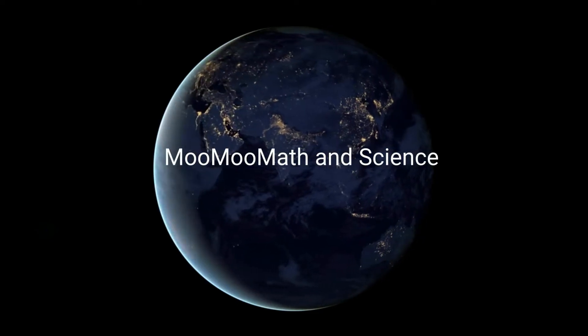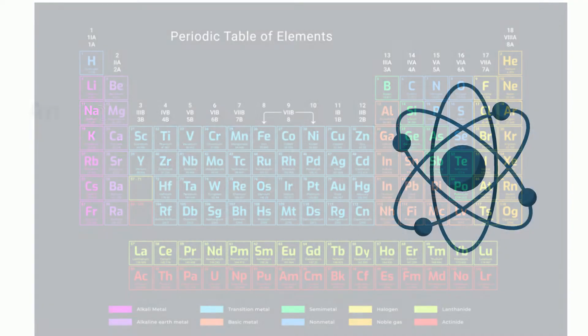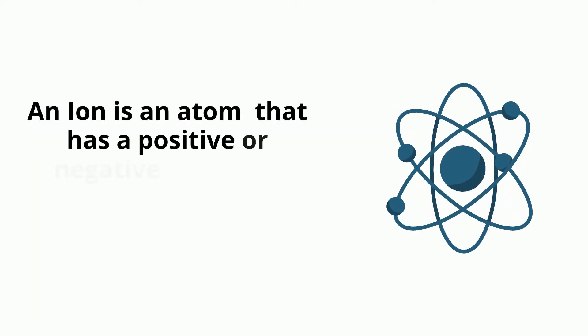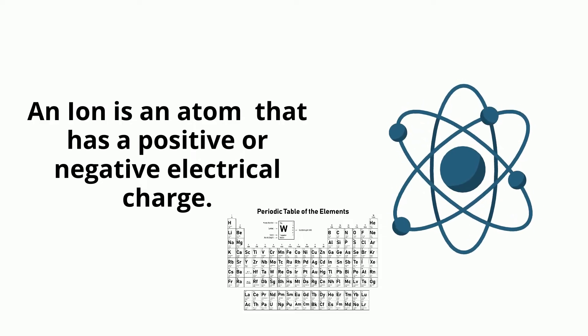Welcome to MooMooMath and Science. In this video, let's talk about the periodic table and how you can figure out ion charges. The periodic table can be helpful when you want to know what type of ion is formed by a given atom.